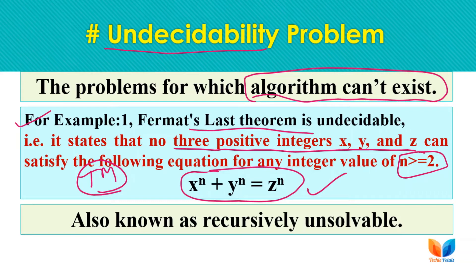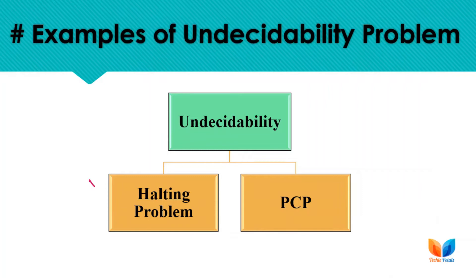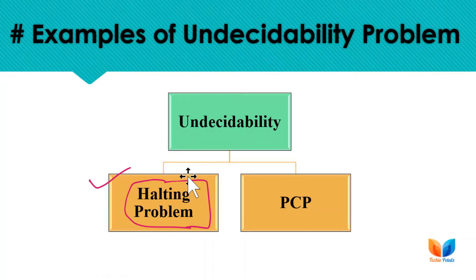Although we can create a Turing machine or program to solve this equation, we cannot conclude with any output — yes or no — because the machine will loop forever checking values of x, y, z and n greater than or equal to 2. These types of problems are not solvable; the machine may get stuck in a loop forever.